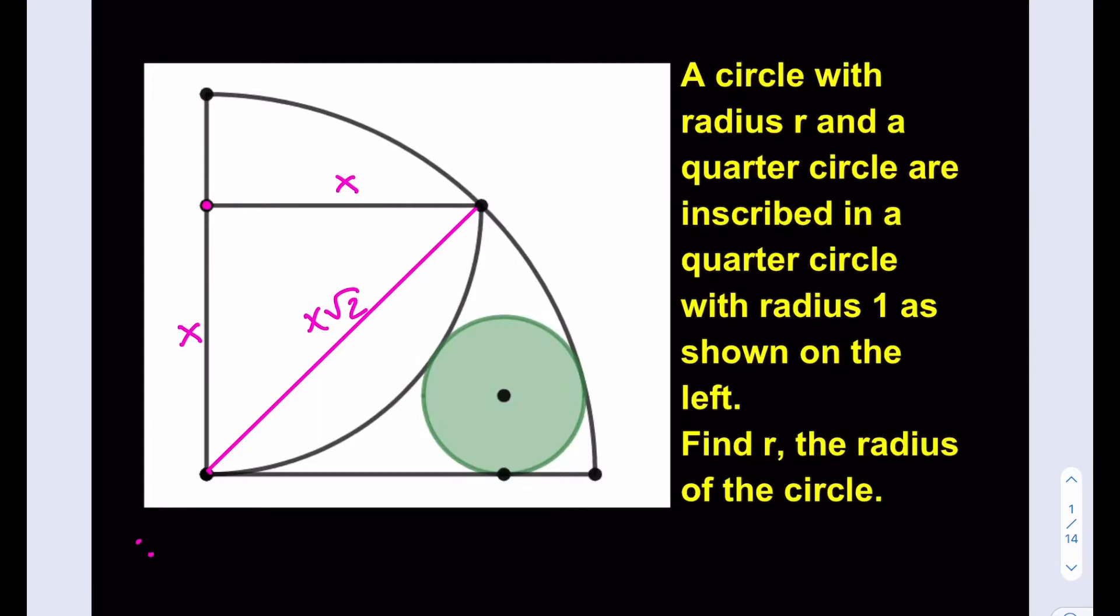Now that is also equal to the radius of my larger quarter circle, which is given as 1. So from here we can solve for x. x is going to be 1 over root 2, which can be written as root 2 over 2. So now I know the radius of the smaller quarter circle.